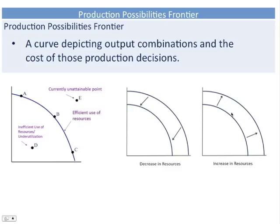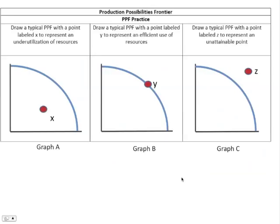To summarize the three scenarios: point X inside the curve represents underutilization of resources. Point Y on the curve represents efficient use of resources. Point Z outside the curve represents an unattainable point until better technology and resources are available. The production possibility frontier illustrates our maximum production level, where we may underperform, and where we may be able to get in the future but cannot reach yet.